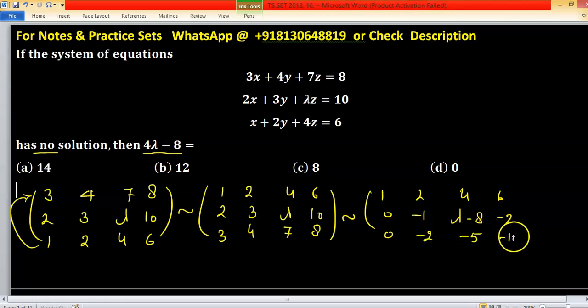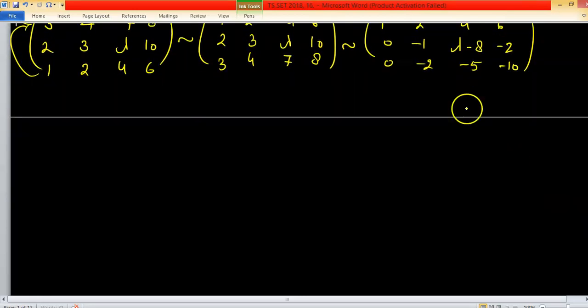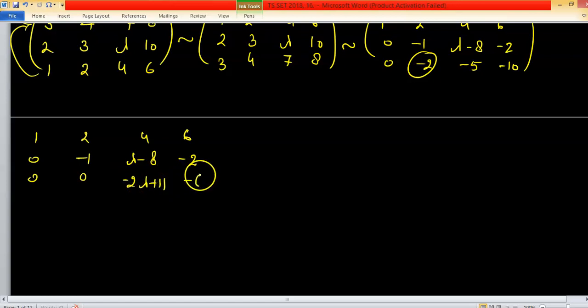This is our equivalent matrix. Now again apply elementary operations to make this entry zero. We have first row 1, 2, 4, 6; second row 0, -1, lambda-8, -2; third row 0, 0, -2lambda+11, -6.